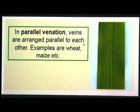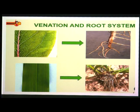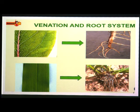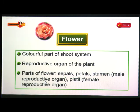The other type has parallel venation, where veins are arranged parallel to each other. Where we have reticulate venation, the root system is the tap root system. Where we have parallel venation, the root system is the fibrous root system. Let us now watch a video on this.